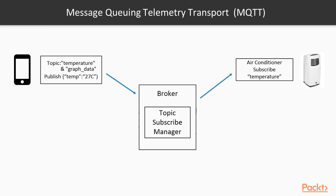For example, a user can publish temperature data on a topic called 'temperature'. The broker then forwards this data to an air conditioner which is subscribed to the same topic, and it sets the desired temperature. This makes the protocol highly scalable because the clients don't have to know each other — they just have to communicate over the topic.